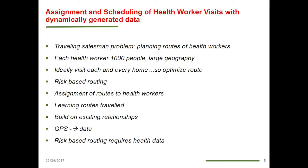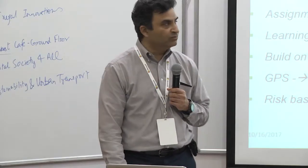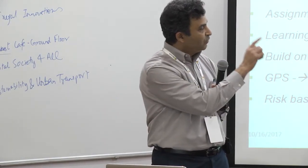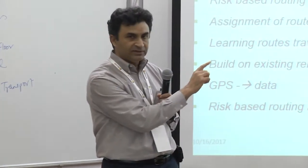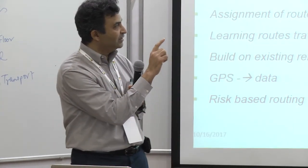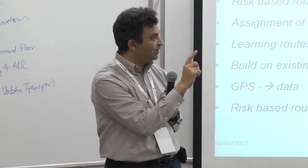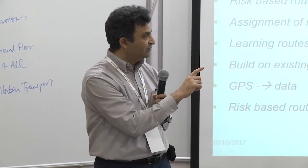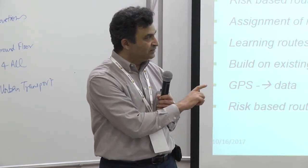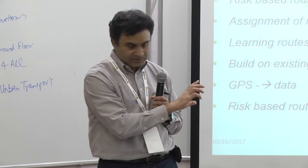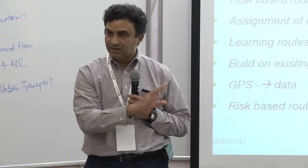The problem can be made more complicated because we may want to optimize which health worker takes on which route. The routes may not be known in advance, so there may be learning of the routes as we go on. We might want to build on existing relationships. We created a four-part evaluation of each problem: social relevance, how interesting it is from an AI perspective, collaboration opportunity, and availability of data. This problem seemed to score high in all of these dimensions, so we considered it our top priority.